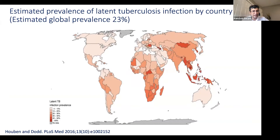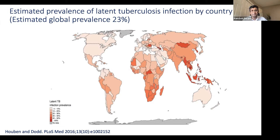Work by Ruben and Dodd showing the prevalence of latent TB infection by country: globally, 23% — almost 2 billion people — are infected with latent TB infection. The key message is we cannot treat everybody with latent TB treatment; 2 billion people is just too much. It is really important to target high-risk populations when implementing TB preventive therapy.